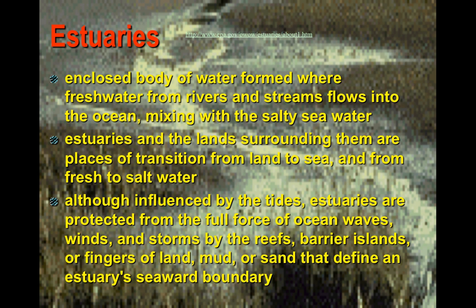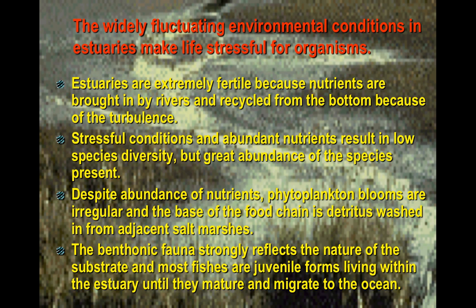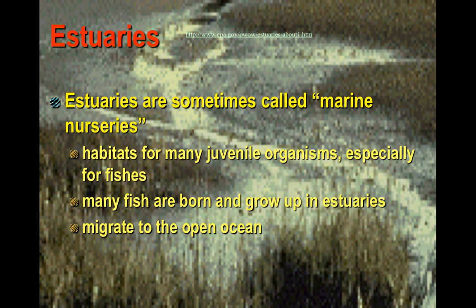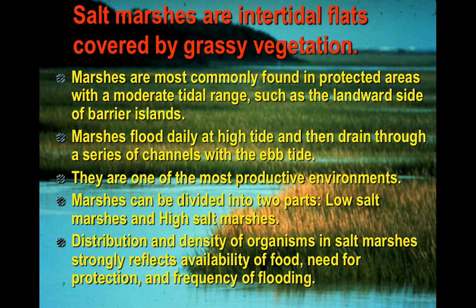Estuaries are the nurseries of the oceans — where many young juvenile animals are located before they go out into the open ocean. They are marine nurseries where juvenile organisms thrive and survive, eventually swimming out to sea. Salt marshes are also included with estuaries.